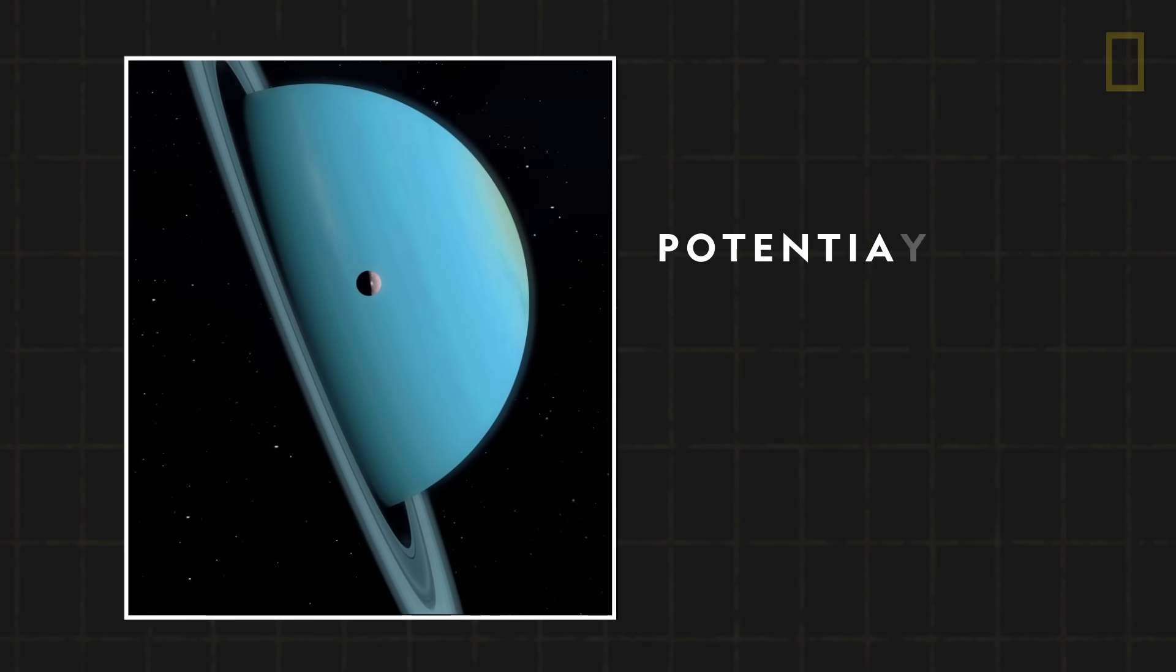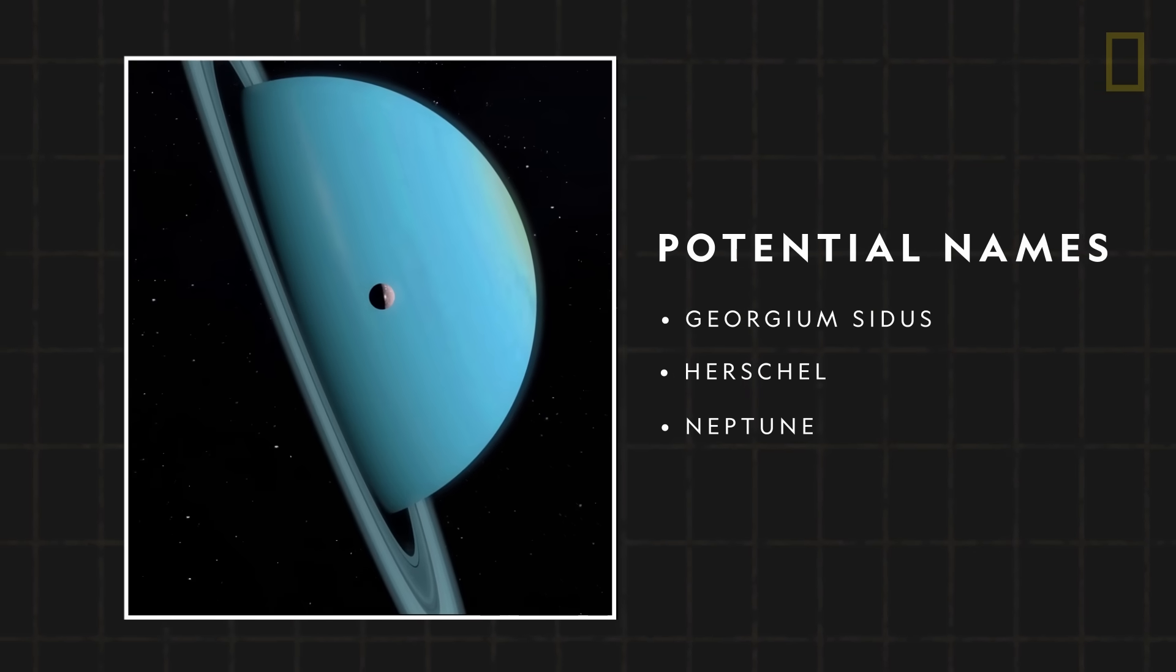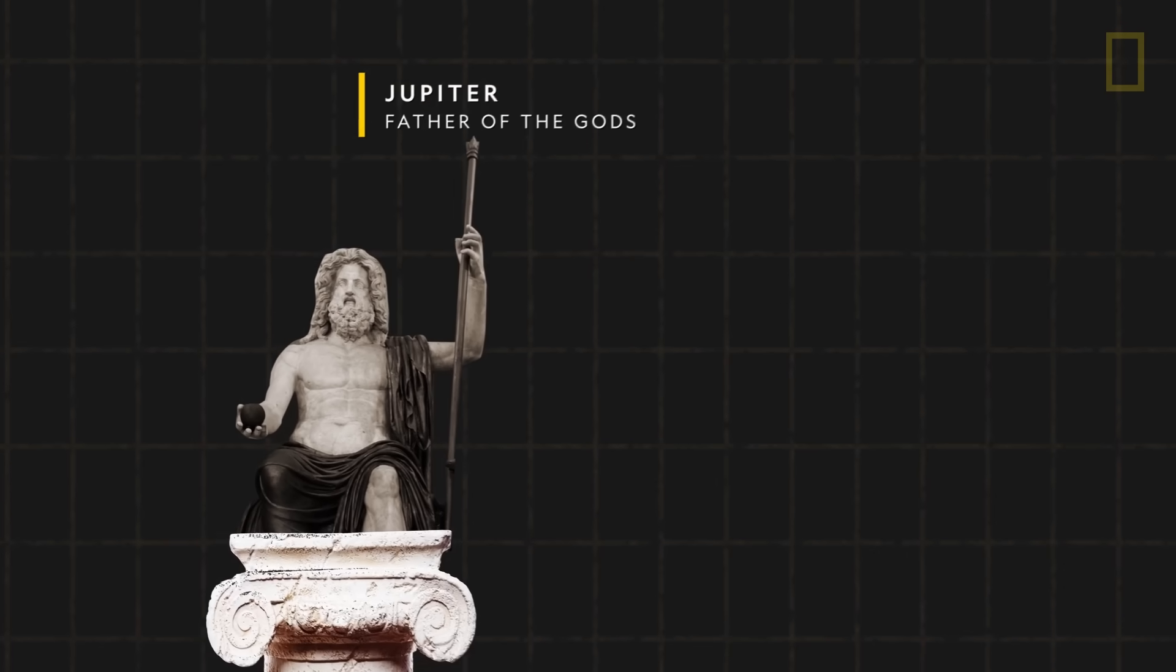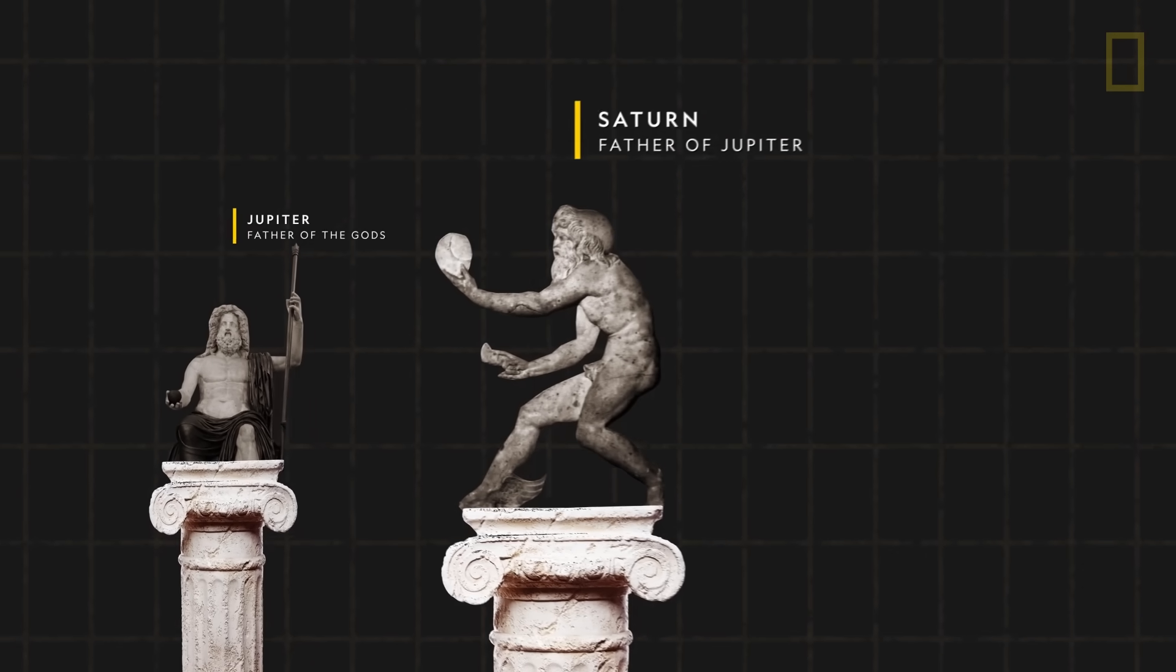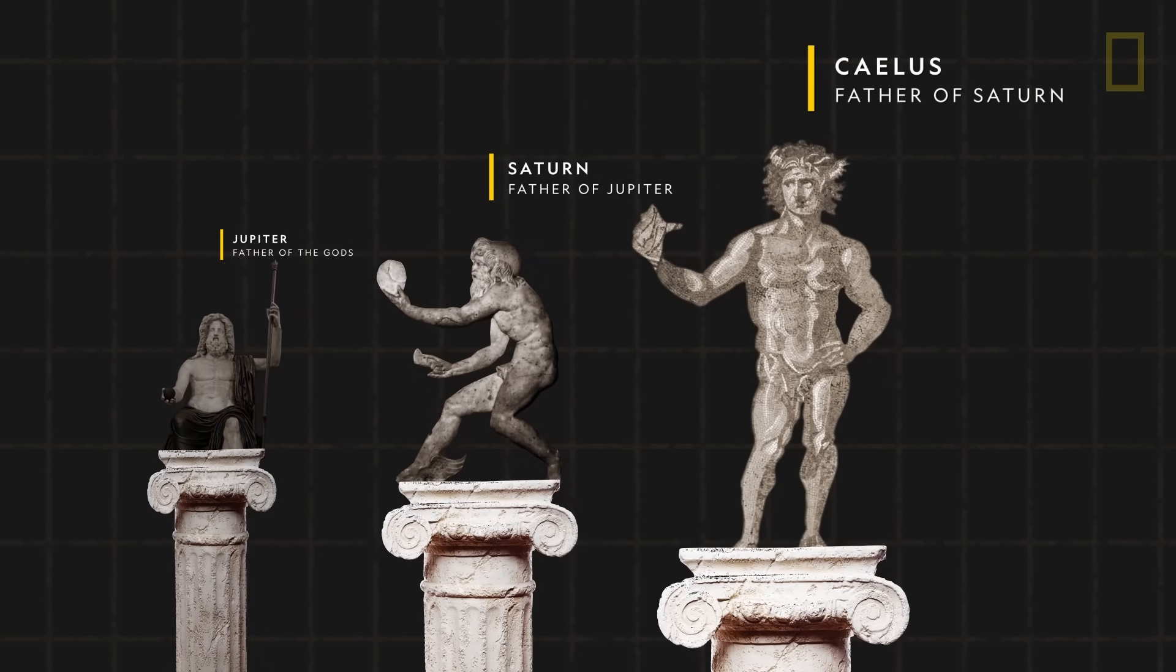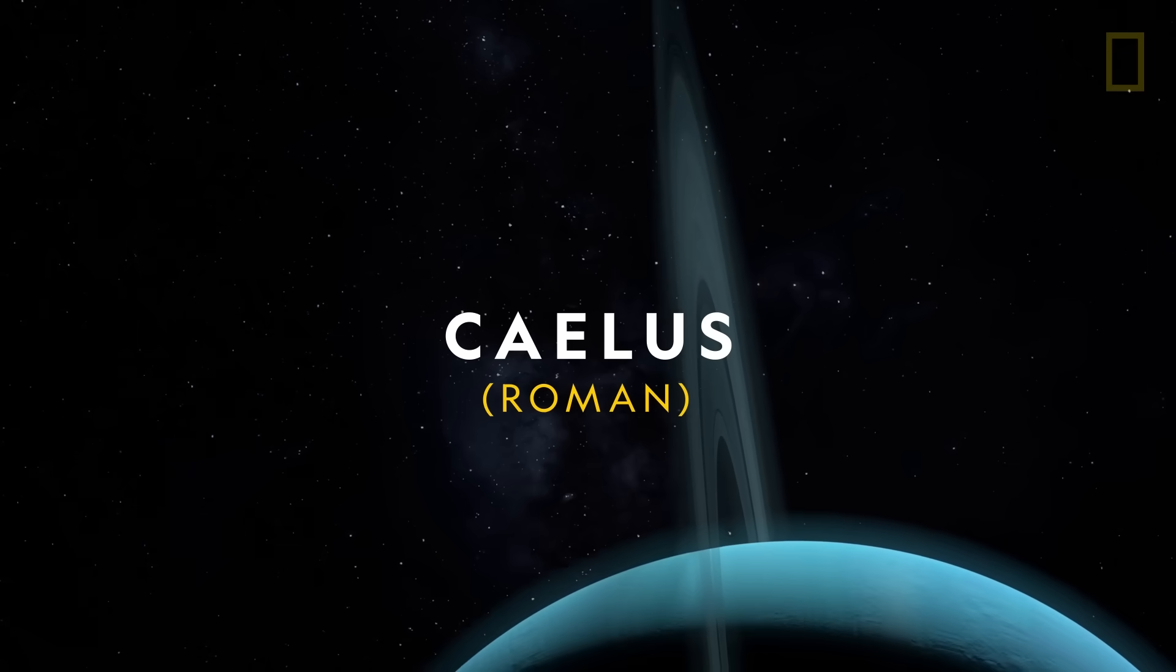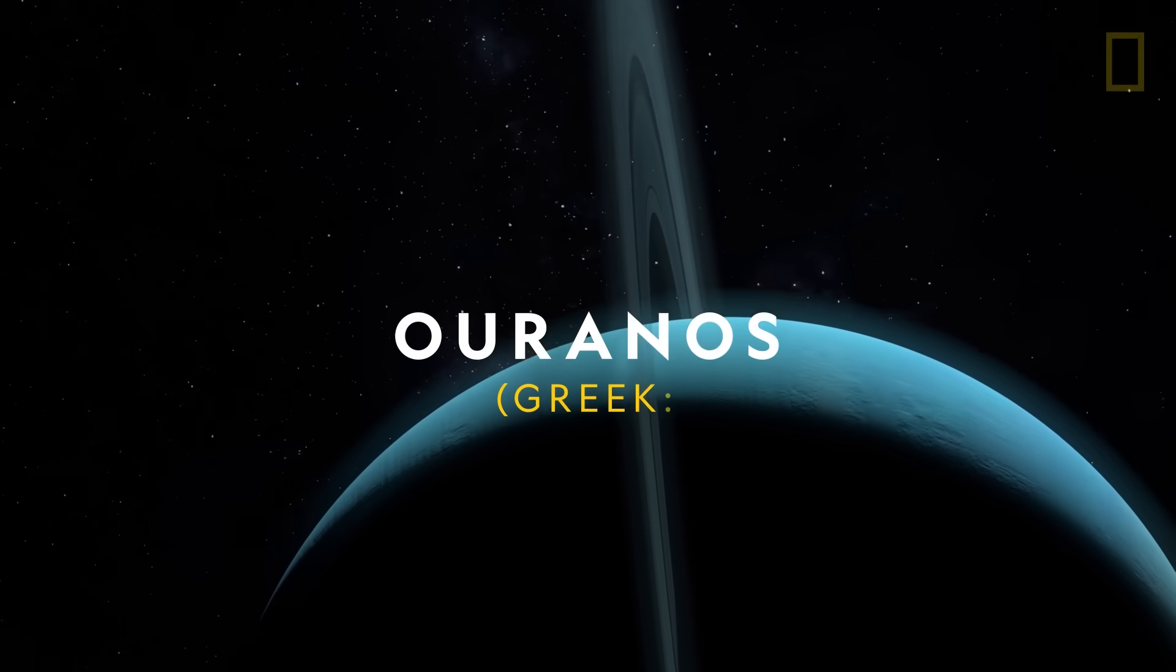The scientific community debated over what the planet should be called, and eventually chose a name suggested by astronomer Johann Bode. Bode believed that since Jupiter was the father of the gods, and Saturn was the father of Jupiter, then this new planet should be the father of Saturn, Caelus. But rather than following the tradition of using names from ancient Roman religion, Bode instead opted for Caelus' ancient Greek equivalent, Uranus.